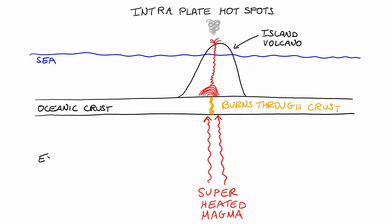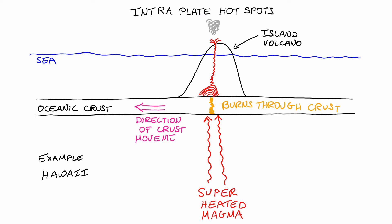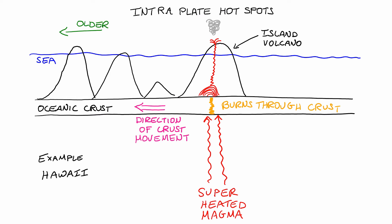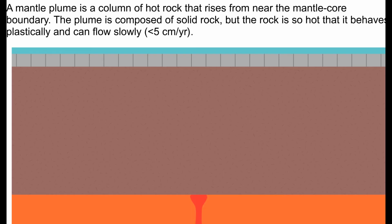There is a prime example of this, and that is Hawaii. Hawaii is seated in the middle of the Pacific Ocean, and it's right above an intraplate hotspot. And if you consider the direction of crust movement, you then get the formation of these islands. And as you move away from the volcano, they become older.